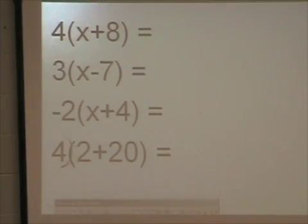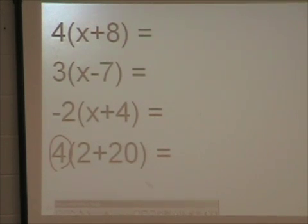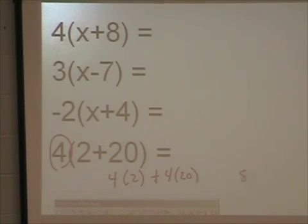Here, I have to multiply 4 times everything inside the parentheses. 4 times 2 plus 4 times 20. 4 times 2 is 8, plus 4 times 20 is 80. Which equals 88. 80 plus 8 equals 88.